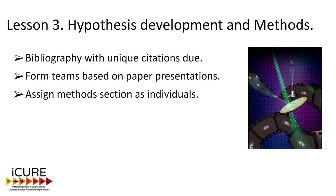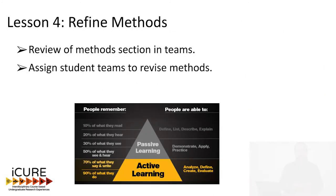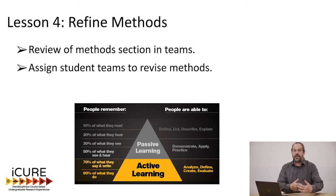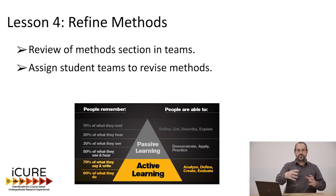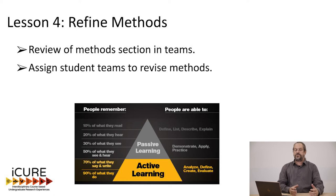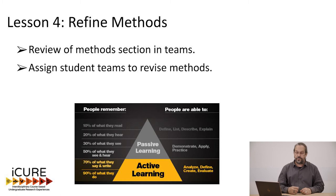That's the end of lesson three. In lesson four, the students have turned in those individual methods, and I share all those methods within a team. If you've got a team of four students, they now get everyone else's methods. It's a real good learning activity because they begin to see how each of them perceives the study they're building. Then you assign them a group method, so they work as a group to write one method. I've found this gives them a much better grasp of what they're trying to do with their research project.